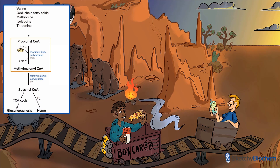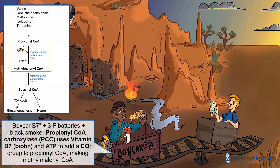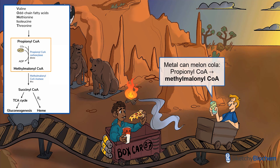In the next step, propionyl-CoA carboxylase — PCC — uses ATP to add a CO2 to propionyl-CoA, making methylmalonyl-CoA. This boxcar is PCC, and the B7 stands for vitamin B7, aka biotin. Like all carboxylase reactions, PCC requires biotin. We also need ATP, hence the 3P batteries. The black smoke from a nearby campfire wafting over the boxcar will help you remember that we add CO2. The product is methylmalonyl-CoA, shown by the kid holding a metal can of melon-cola. Just a side note: the enzyme epimerase changes methylmalonyl-CoA from the D to L conformation.